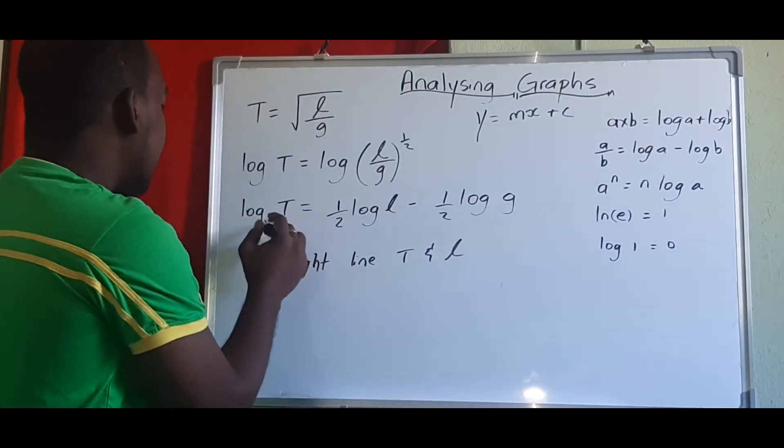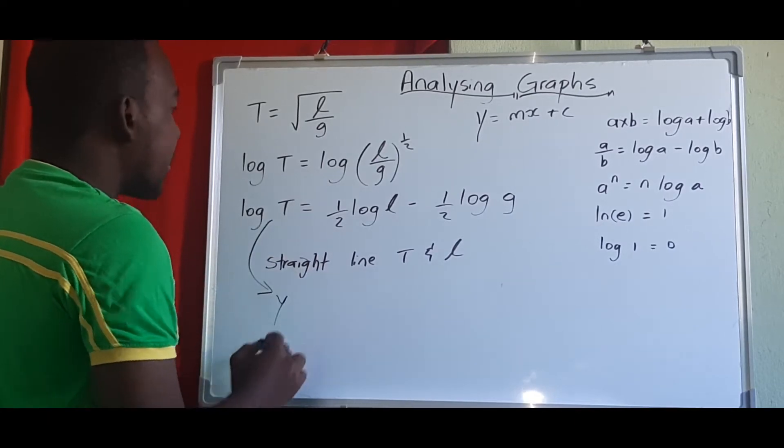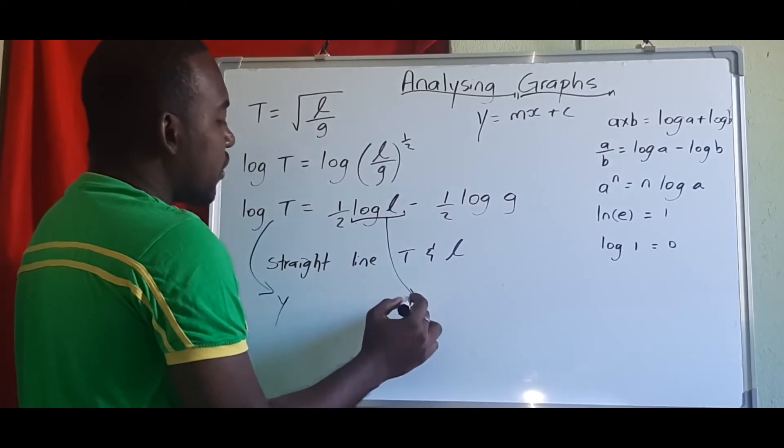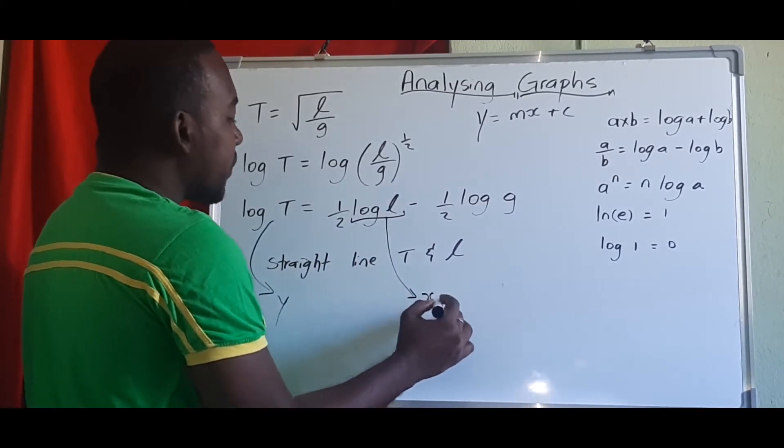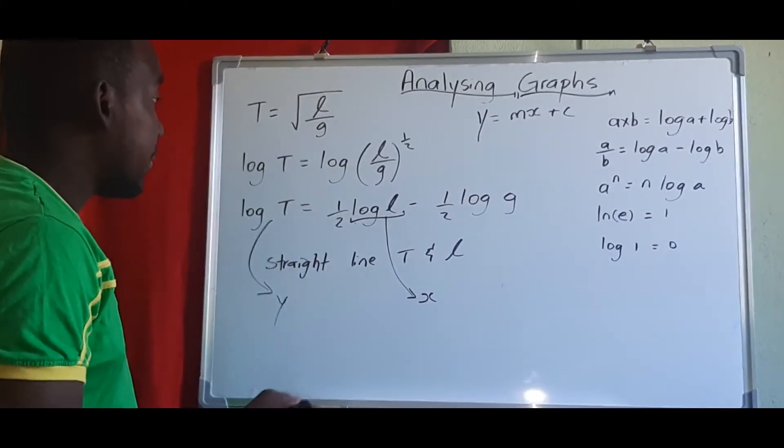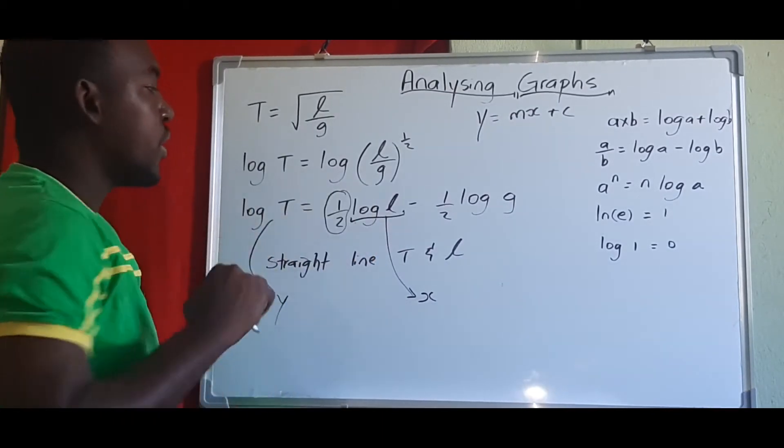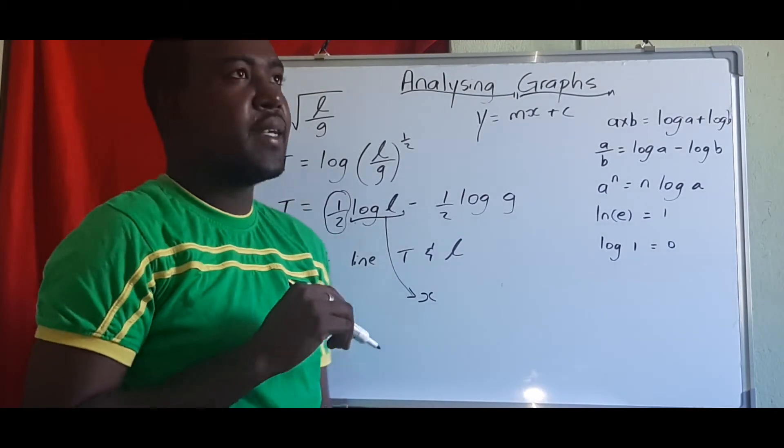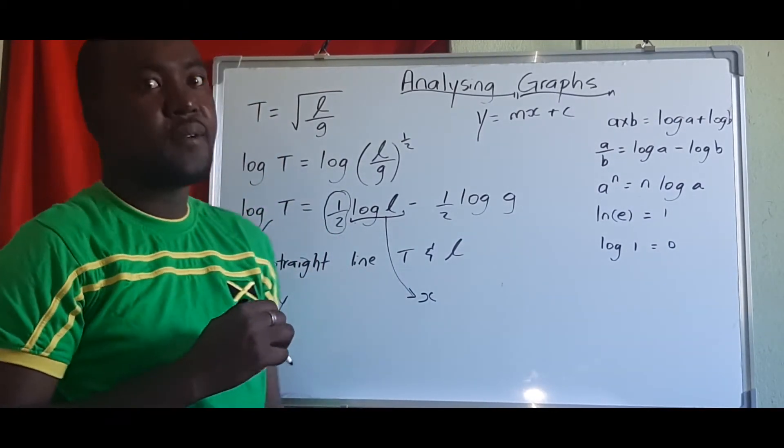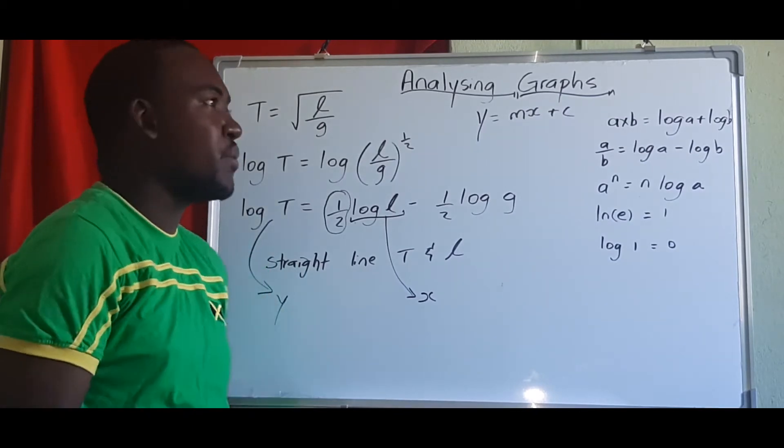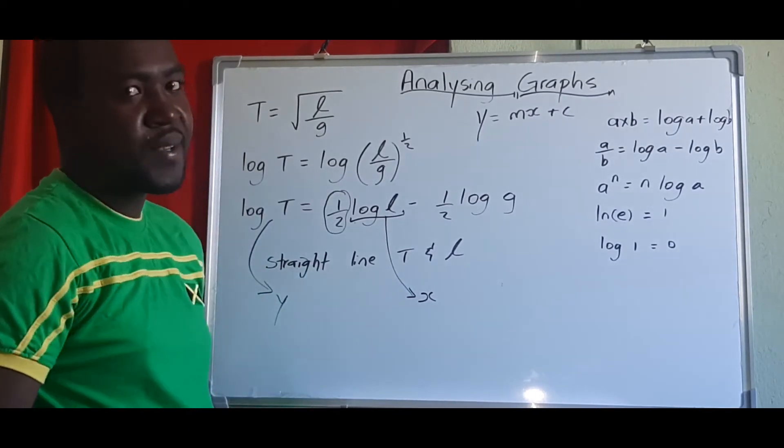So now we can have log t going on our y, and we know log l go on our x-axis. So that means if we find a gradient of this graph, then we should get a number that is close to 0.5. If it's not that close to 0.5, then that means something went wrong.